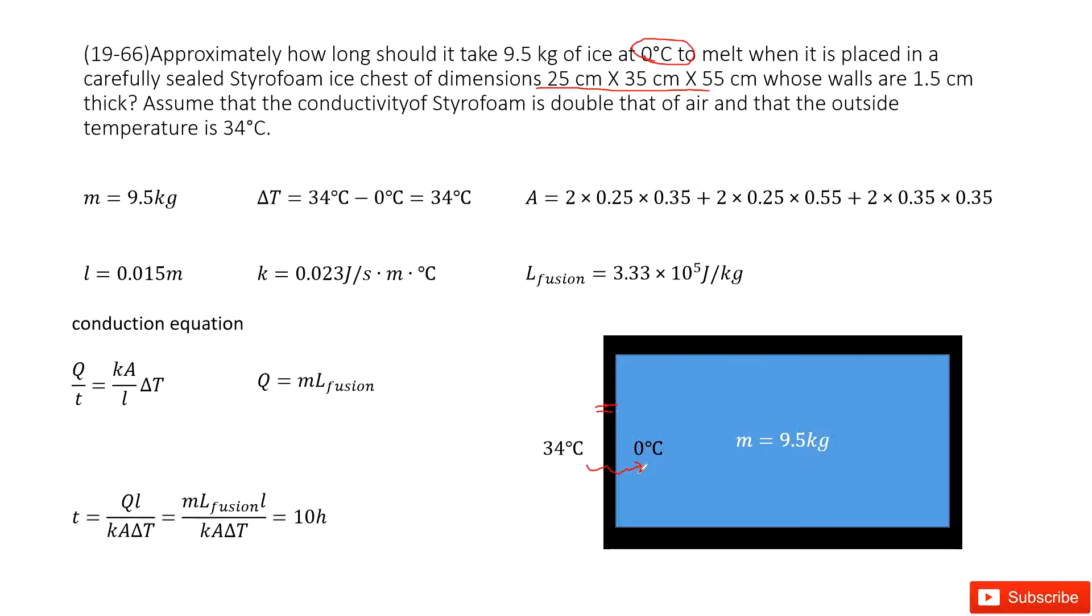So in this case, we can write the conduction equation. The conduction equation tells us how energy is transferred from the environment to the ice. See, Q over T - this is the rate of energy loss from the environment, right? Equal to kA divided by L times delta T. Agree? Delta T is the temperature difference. So we can get it there.